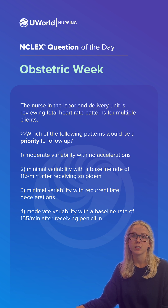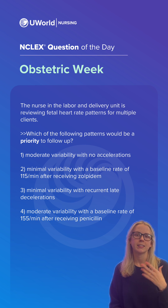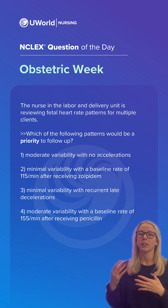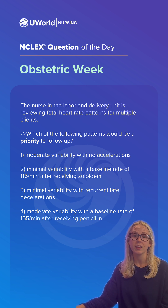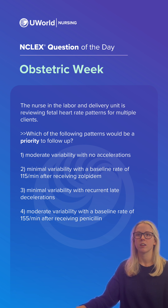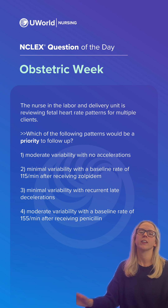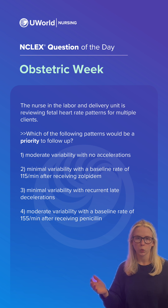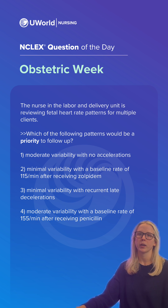Option 2 shows minimal variability with a baseline rate of 115 beats per minute after receiving zolpidem — which is Ambien, a sedative-hypnotic we give to help laboring mothers get some rest. This is technically a Category 2 strip because of the minimal variability, but the fetal heart rate of 115 is still within our normal range of 110 to 160. We may keep an eye on this baby, but it's not our number one priority.